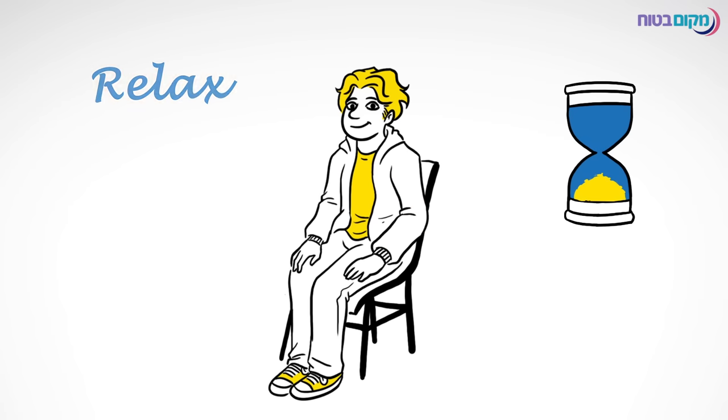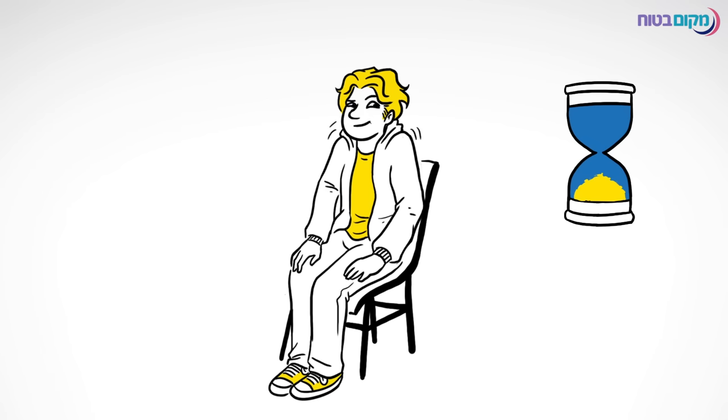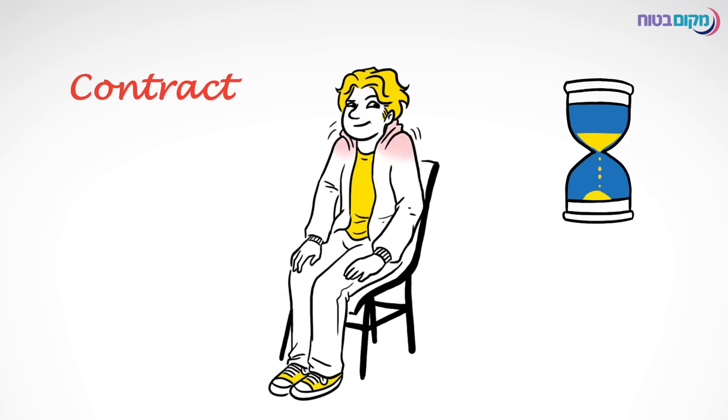Next up, the shoulders. Shrug your shoulders up against your ears as tight as you can. Count down 5 seconds. 5, 4, 3, 2, 1. And relax.